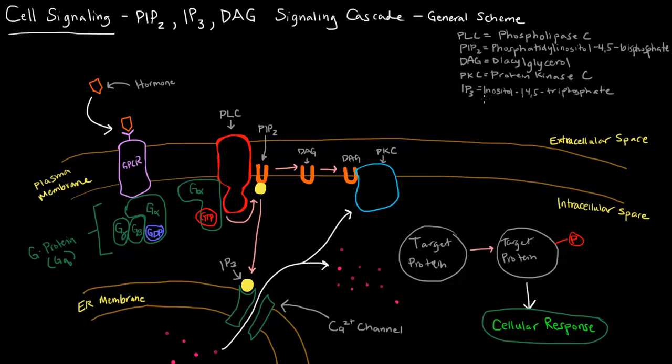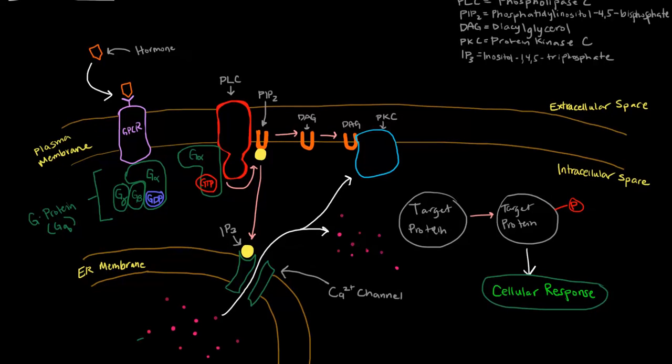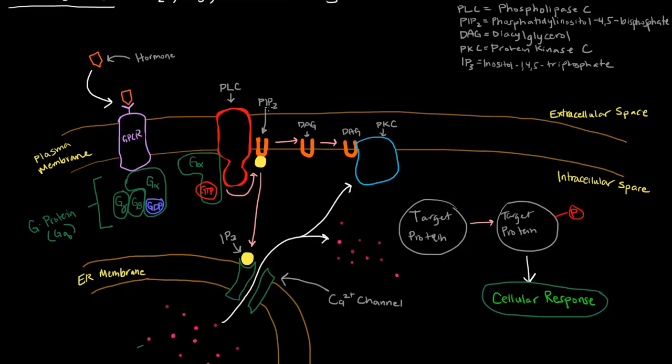I've drawn a little legend here for all these different abbreviations. So what PLC does, or phospholipase C, is it cleaves PIP2, which is phosphatidylinositol 4,5-bisphosphate, which is this thing here, this entire structure here.